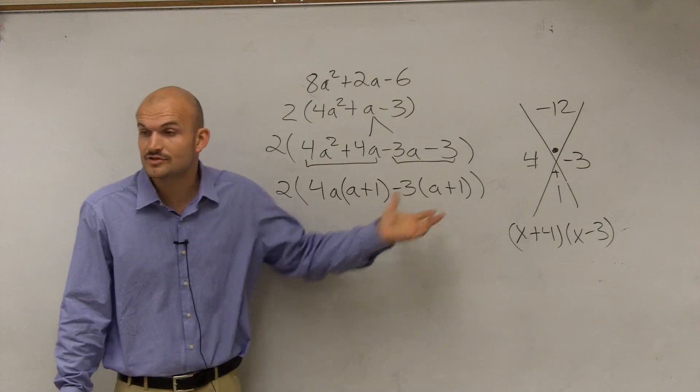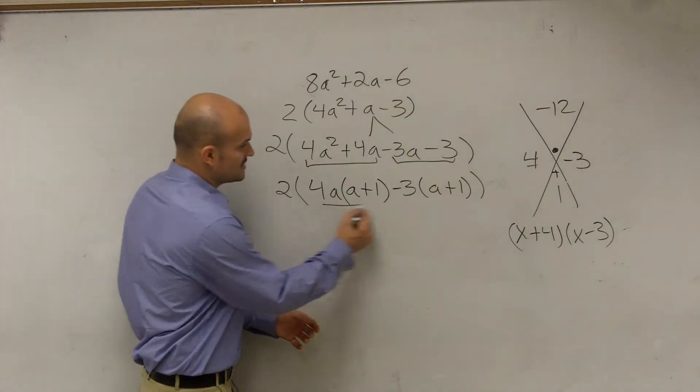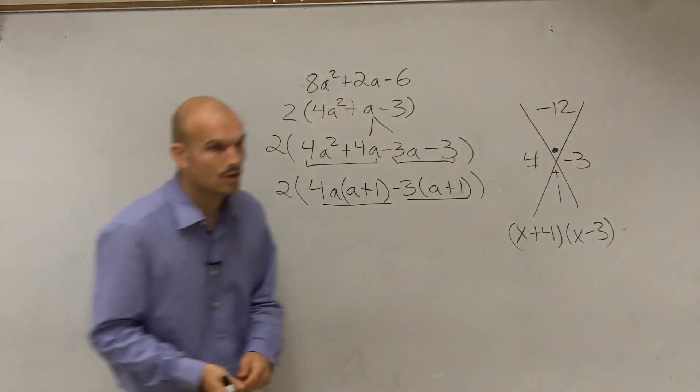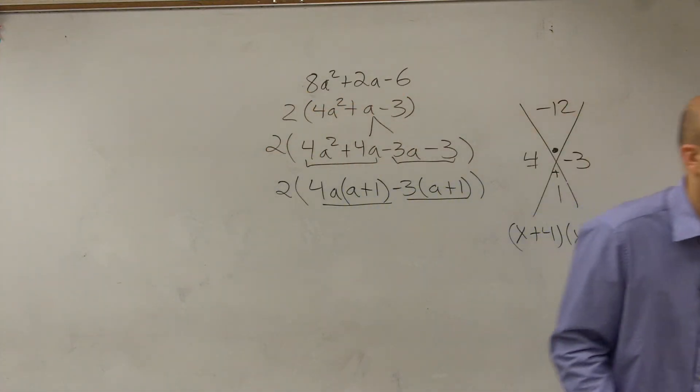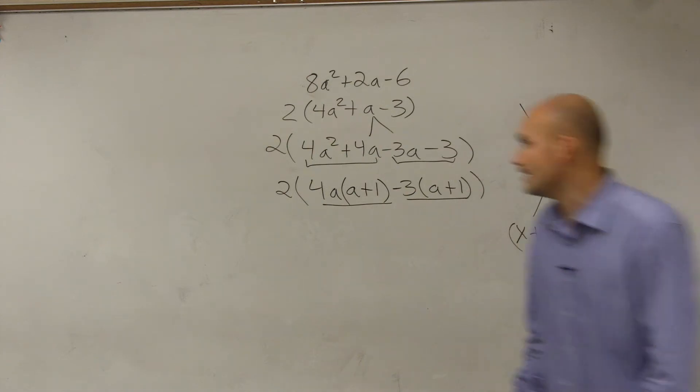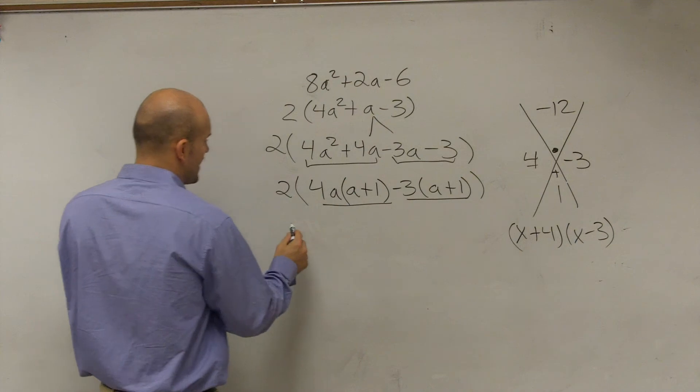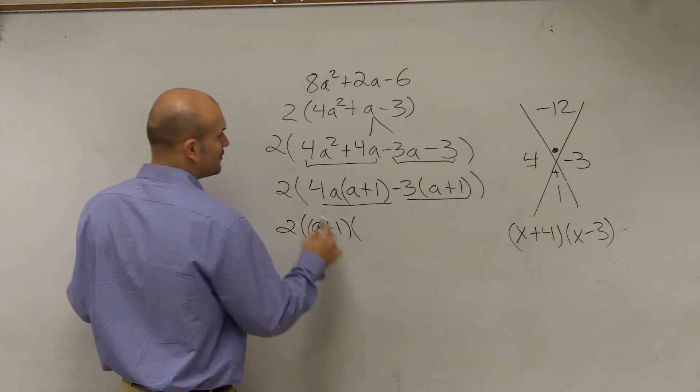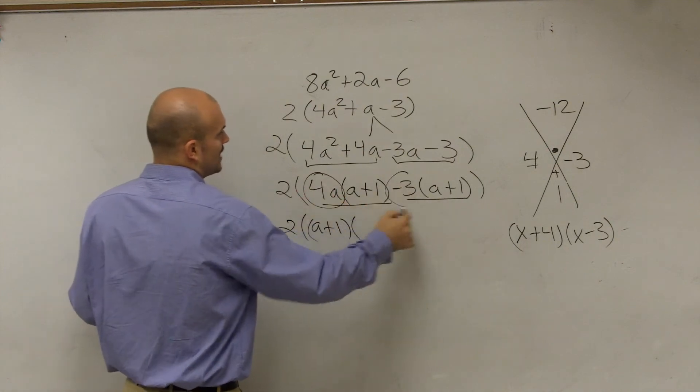And then inside this equation, you guys notice that you guys have two terms. You have this as a term and this as a term. Between those two terms, what do those two terms share? Yes, what? They both share an a plus 1, right? So now I can factor out an a plus 1. And what I'm left with is a 4a minus 3.